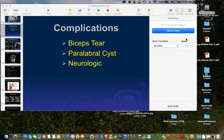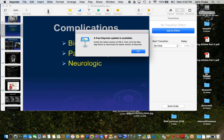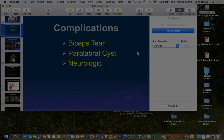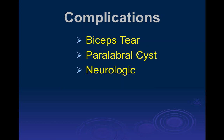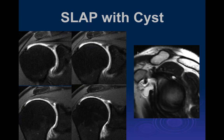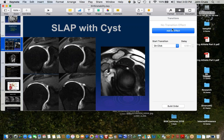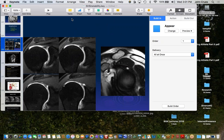Let's get started today. We're going to finish up a little bit on instability, talk about a few complications, and then we'll go on to bone injuries. Sorry about this — these are the complications of shoulder instability.